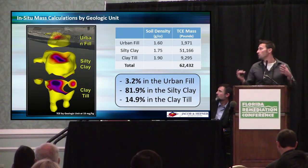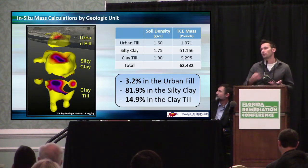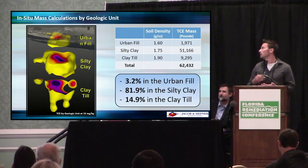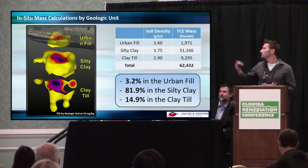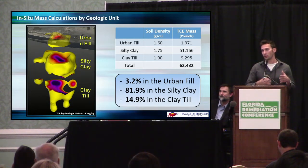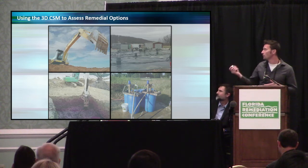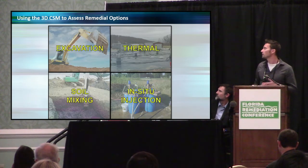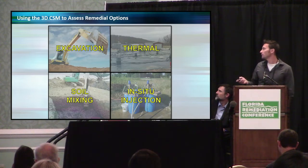Now that we have all the pieces — maps, cross-sections, volume calculations, mass estimates — we can start costing out remediation technology options. The four we evaluated at this site were simple excavation, thermal treatment, soil mixing, and in-situ injection.